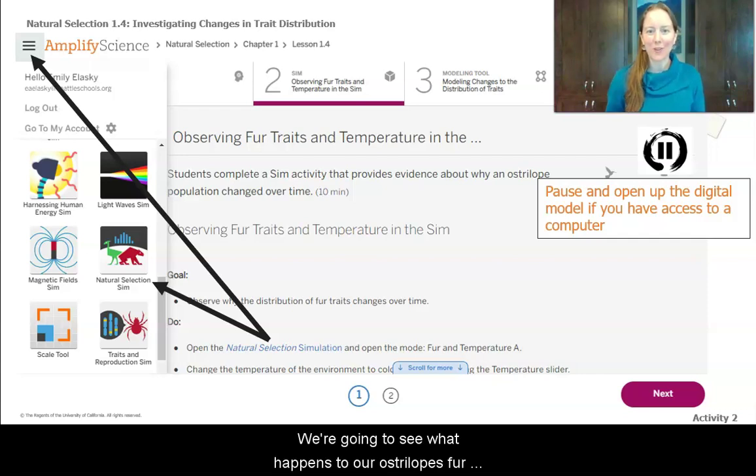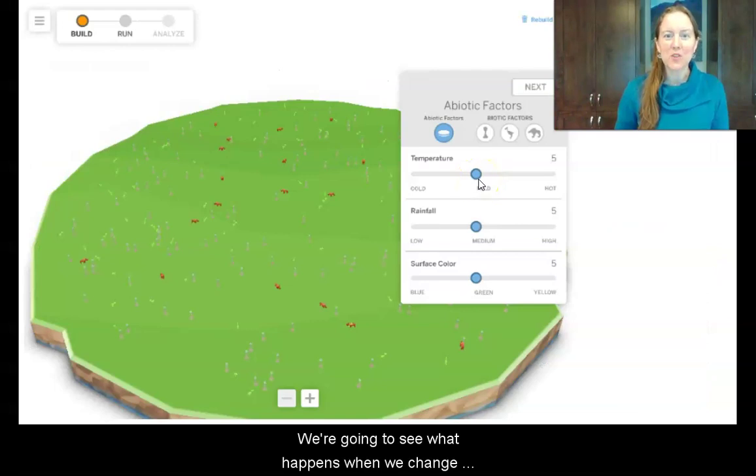We're going to see what happens to our Australopes fur distribution. If you're logged into Amplify, go ahead to 1.4 tab 2 and launch the Natural Selection Sim. We're going to see what happens when we change the temperature.